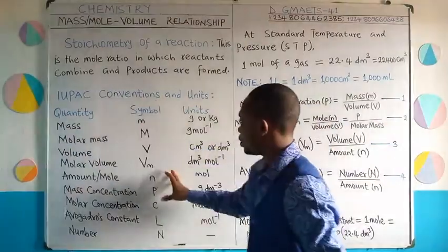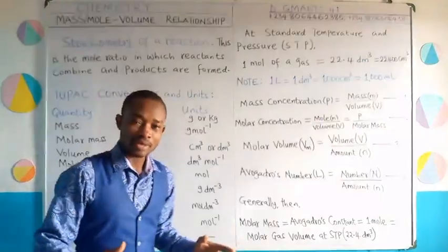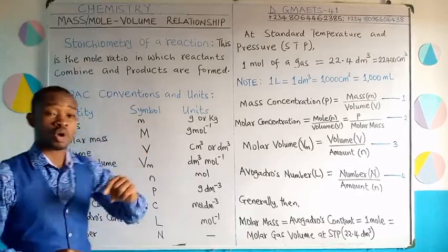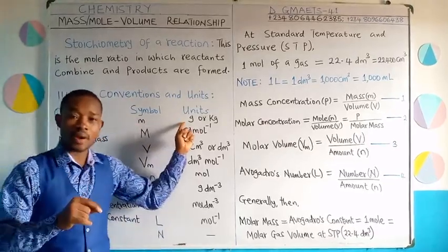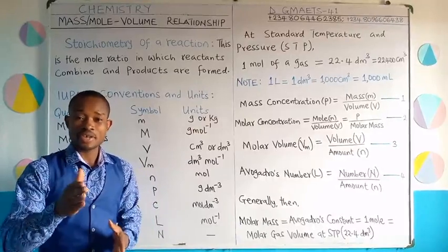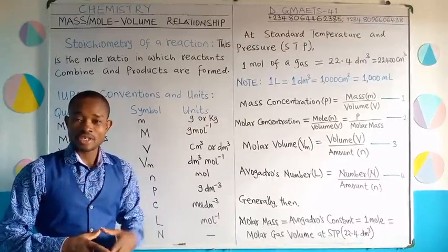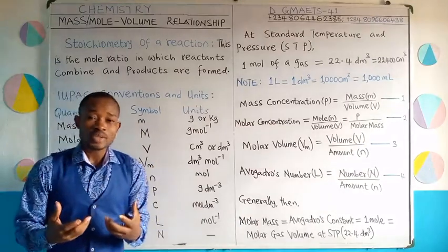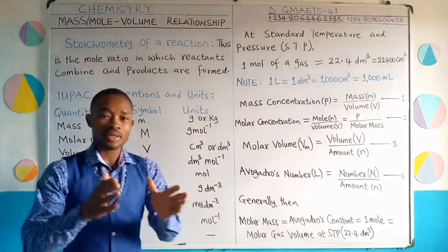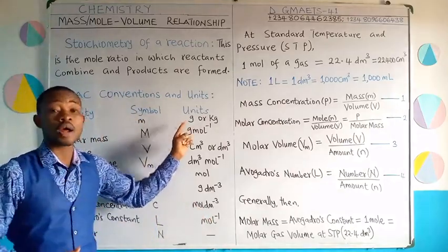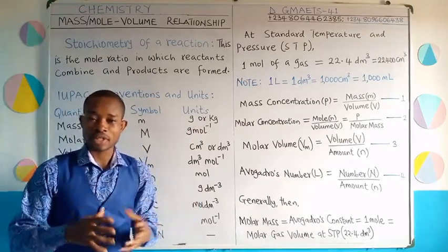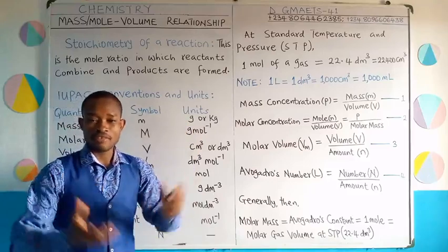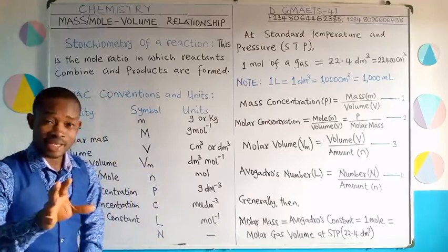Quantities, symbols and their units. We talk about mass — we have already treated that in previous classes. The symbol is small letter m and the unit is gram or kilogram. The SI unit of mass is kilogram, which we discussed in physics. But when dealing with chemistry calculations, mass is most often given in grams. If necessary, we can convert from grams to kilograms by dividing the given gram value by 1000.